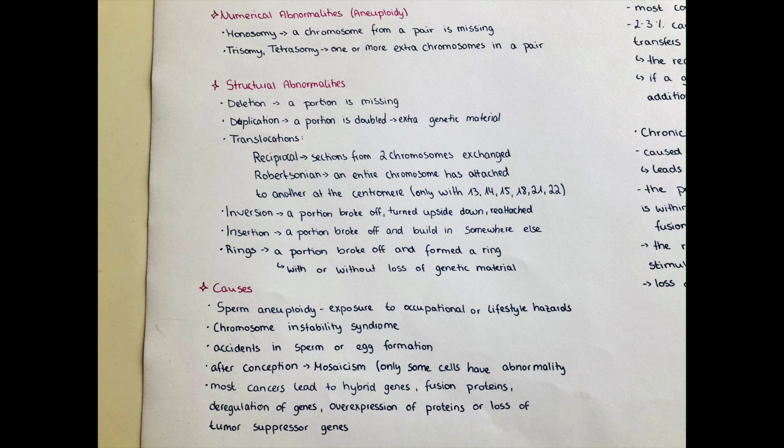When a sperm cell and an egg cell fuse, they build a zygote, which will then divide to 2, 4, 8, 16 cells and so on. When at some point in this dividing process one of the cells mutates, then all cells descending from this cell will carry the mutation, but not all the other remaining cells.